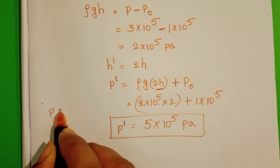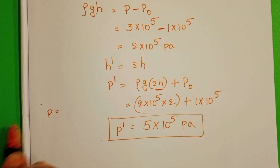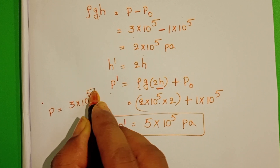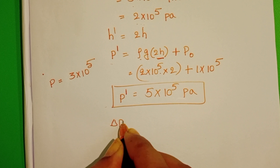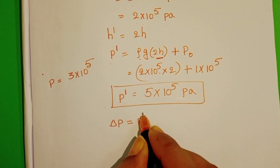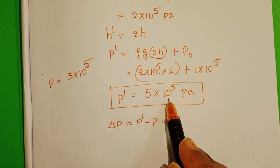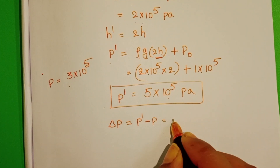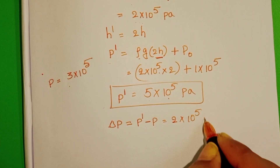Initially, the total pressure at the given depth is 3 × 10⁵ pascal. The change in pressure equals final pressure minus initial pressure: 5 × 10⁵ minus 3 × 10⁵ equals 2 × 10⁵ pascal.